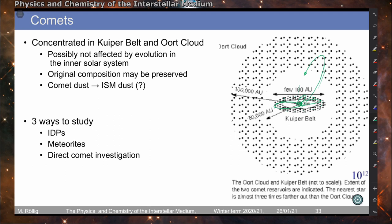One interesting aspect is that the Oort cloud, and to some degree also the Kuiper belt, represent different evolutionary periods from the formation of the solar system. The Kuiper belt dates from the time when the protoplanetary disk formed, while the Oort cloud composition is still closer to that of the original molecular cloud from which the sun formed. One hypothesis is therefore that the material in the Kuiper belt and Oort cloud is representative of the material that actually formed the solar system, and that cometary dust may be closely related to original interstellar dust.